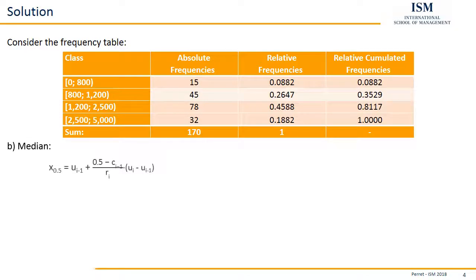The formula for the median looks as follows. So what we need for calculating the median is first of all the median class. How do we find the median class? Well, the median class is the class where the relative accumulated frequency first becomes larger than 0.5.